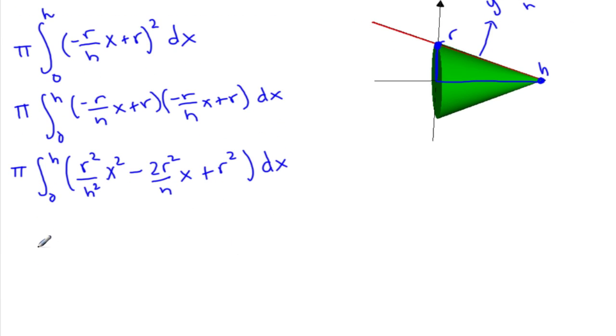Alright, so now we will integrate. We have π times r²/h² times the integral of x², which is 1/3 x³, minus...